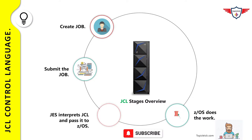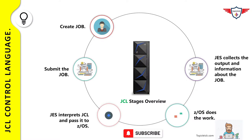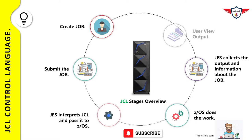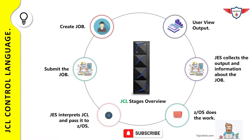In the processing stage, z/OS executes the job. The initiators examine the JES pool, select an appropriate job, execute it in its address space, and return resources for another job. In the output phase, once the job is completed, JES2 collects the output and sends it to print based on output class and device setup. In the last phase, the user can view the output in the spool — it can be a report, a new dataset, or a database update, depending on the business requirement.